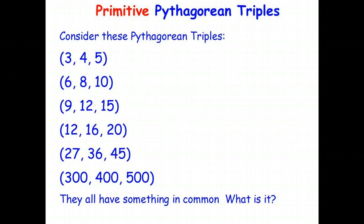Well it turns out some of those Pythagorean triples can also be classified as primitive Pythagorean triples. So just have a look at this particular set of Pythagorean triples: 3, 4, 5; 6, 8, 10, and so on. Now they all have something in common, so can you see what it is?